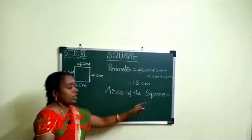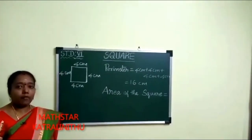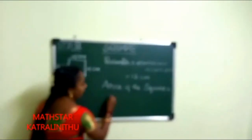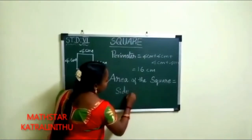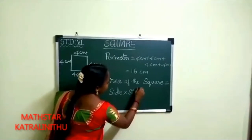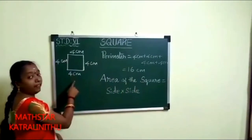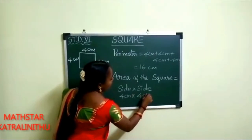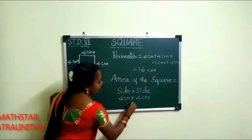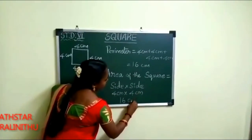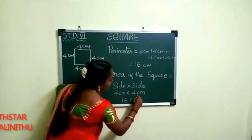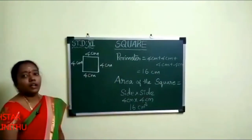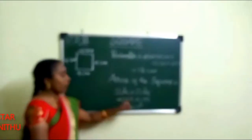Next we are going to find the area of the square. The area of the square formula is side into side. So, side is 4 centimeter into 4 centimeter. 4 fours are 16. Centimeter multiplied by centimeter gives square centimeter. The area unit is the square of this unit.